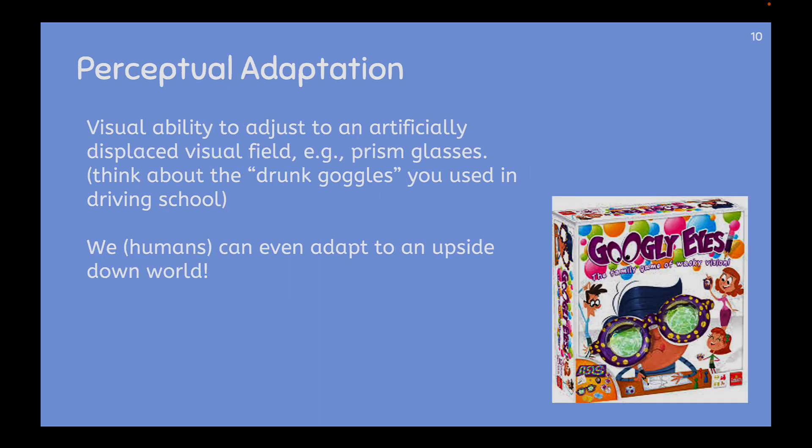Perceptual adaptation is the visual ability to adjust to an artificially displaced visual field. For example, the drunk goggles or the upside-down occipital lobe goggles that you used in our lab, or maybe those used in driving school. We humans can adapt even to those upside-down worlds if we were to wear them long enough. When you were throwing the balls into the basket or trying to pin the tail on the donkey, you only had a few minutes to adjust. If you had an entire week, you would figure out how to adjust yourself to get around in a world like that — the same way a completely blind person gets around through the use of their ears and tapping a stick in front of them.